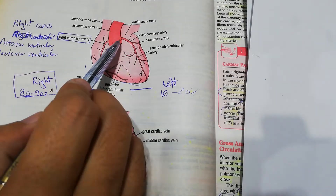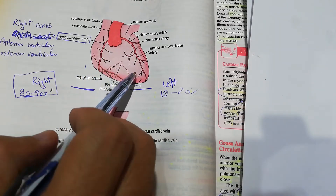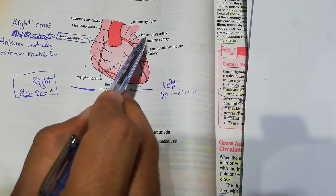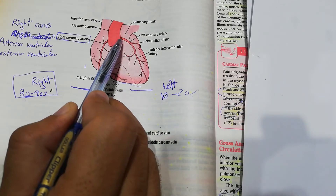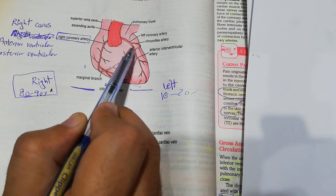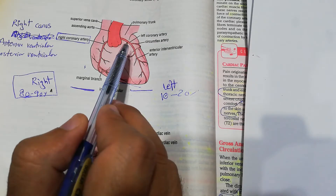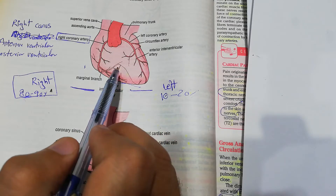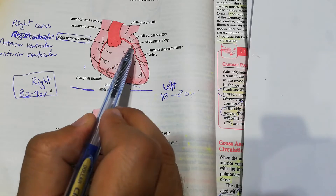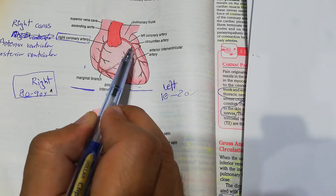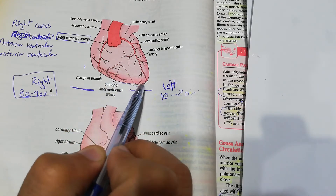Another important artery supplying blood to the heart muscles is the left coronary artery. It also takes its origin from the aorta and runs in the anterior interventricular groove. When it goes to the back side, that is known as the posterior interventricular groove.